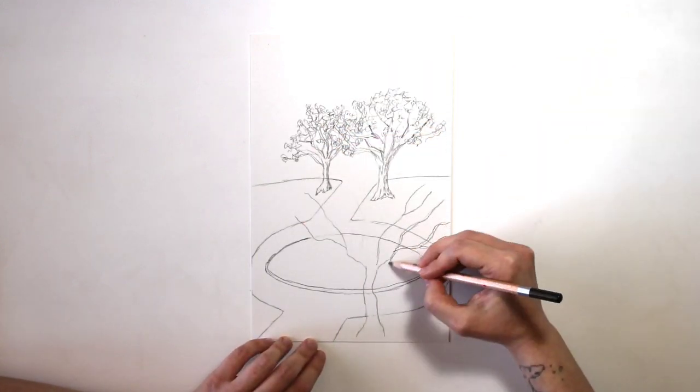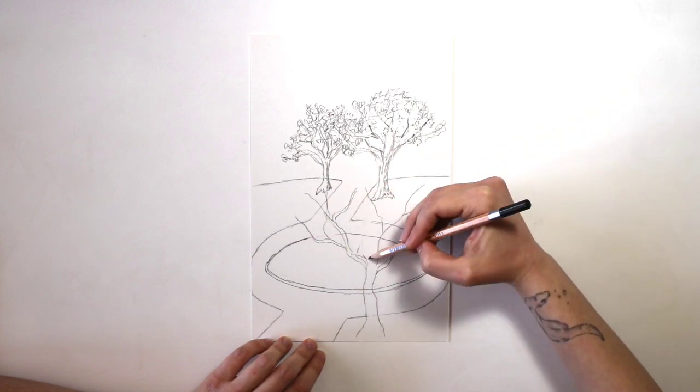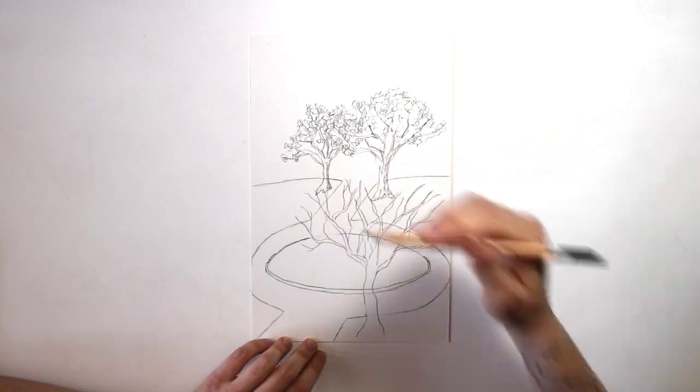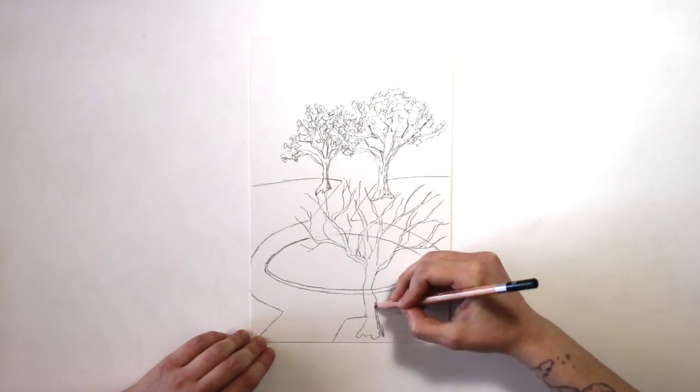Now that I'm drawing the tree that is closest to my window, I'm making sure that I make it larger. I can add a bit more detail to this one because it's easier for me to see from where I'm sitting.